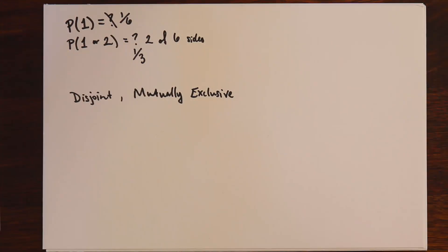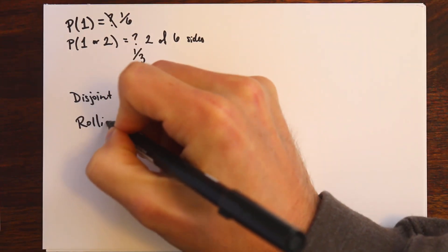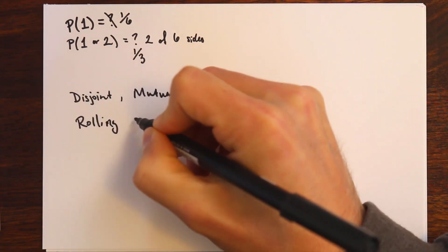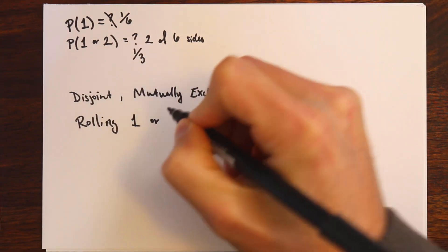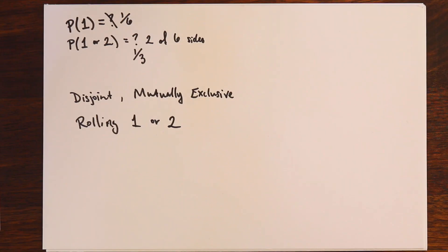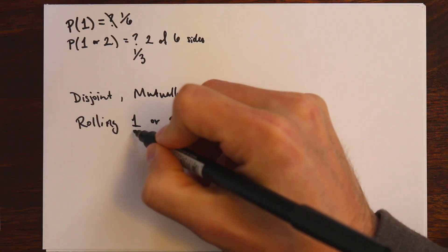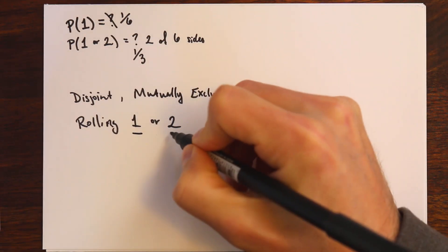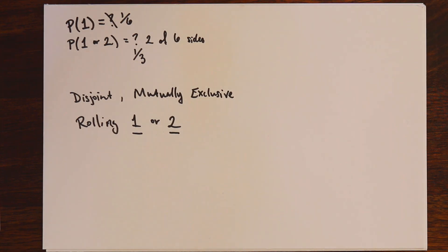If we think back to rolling a 1 or a 2, these are what are called disjoint events. Because when we roll a die, we can't have both of these outcomes happen — we can't have both a 1 and a 2 for a single roll. Since they can't happen together, we call them mutually exclusive or disjoint events.